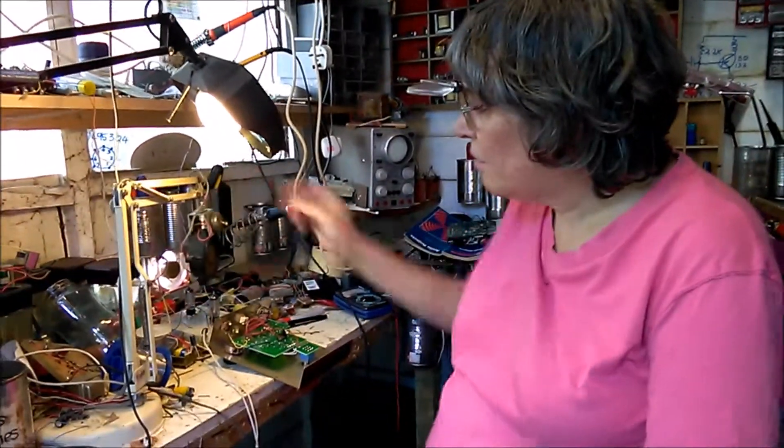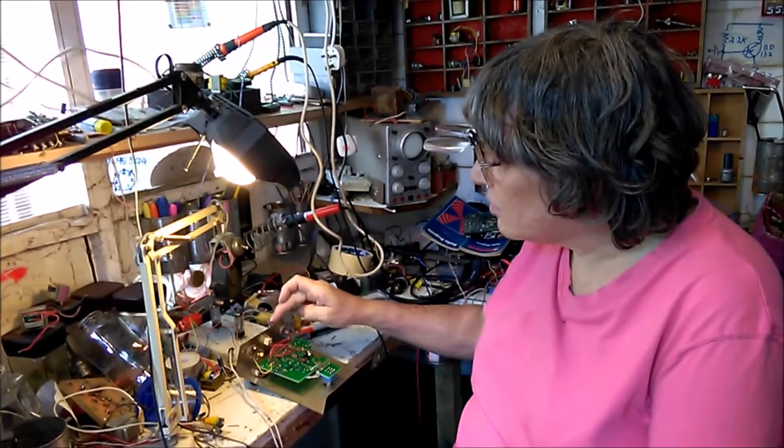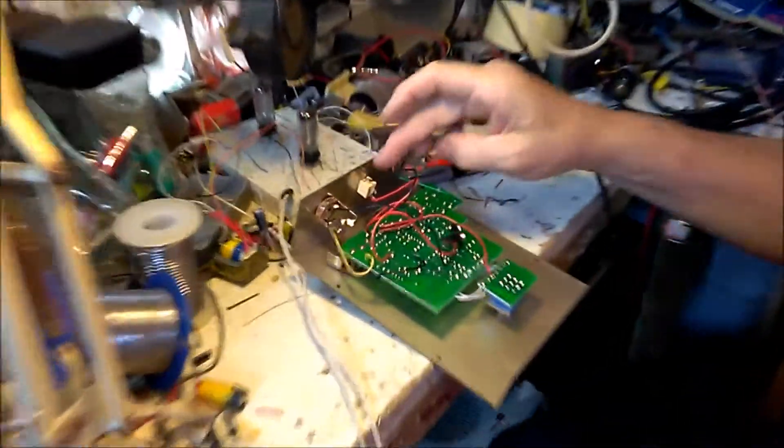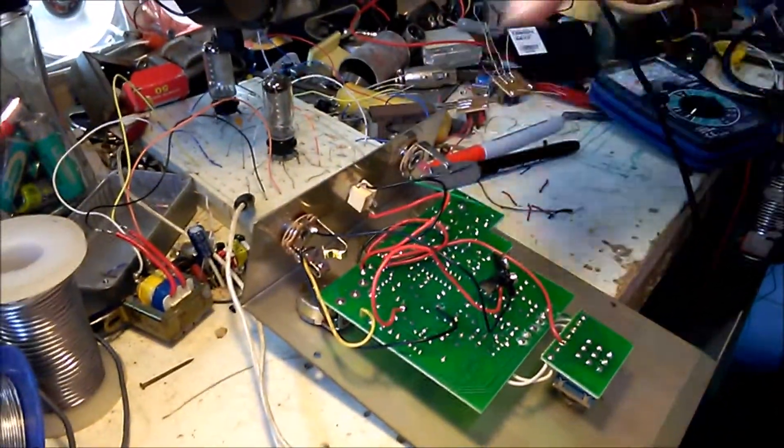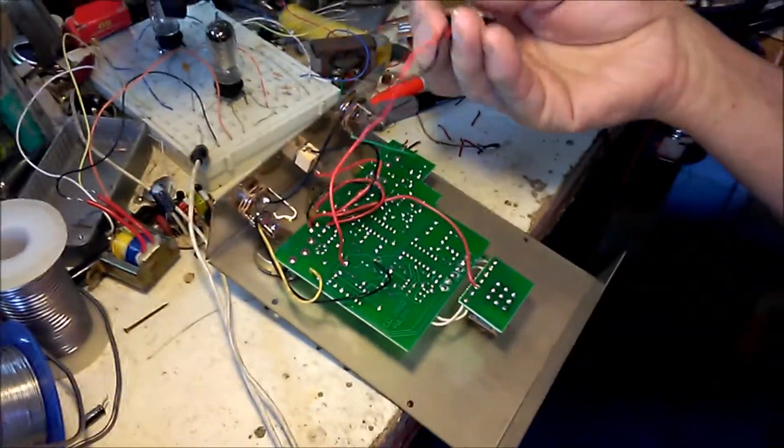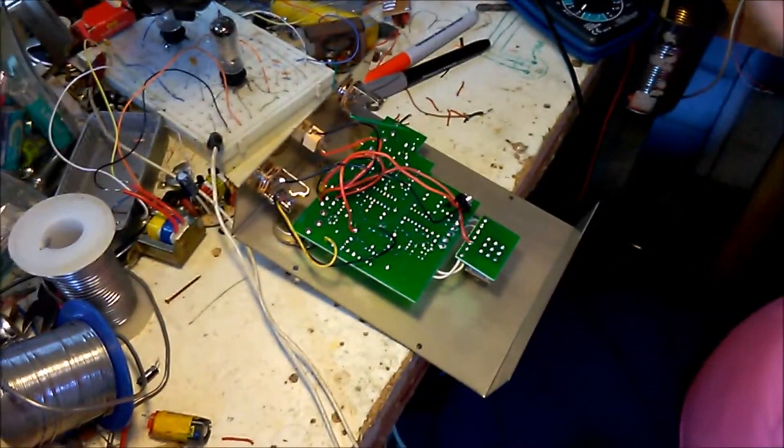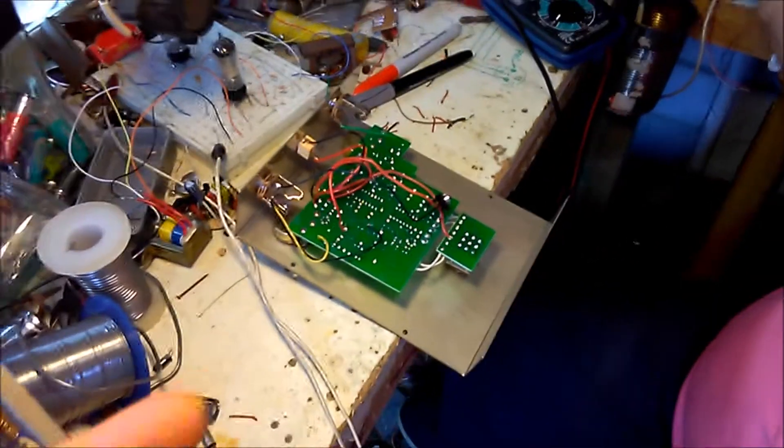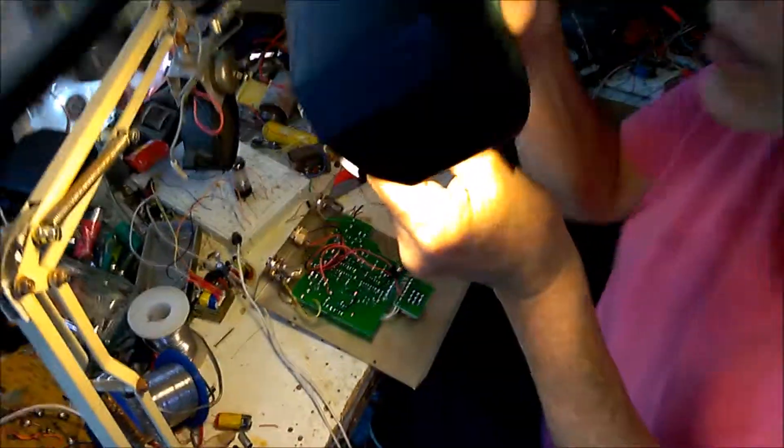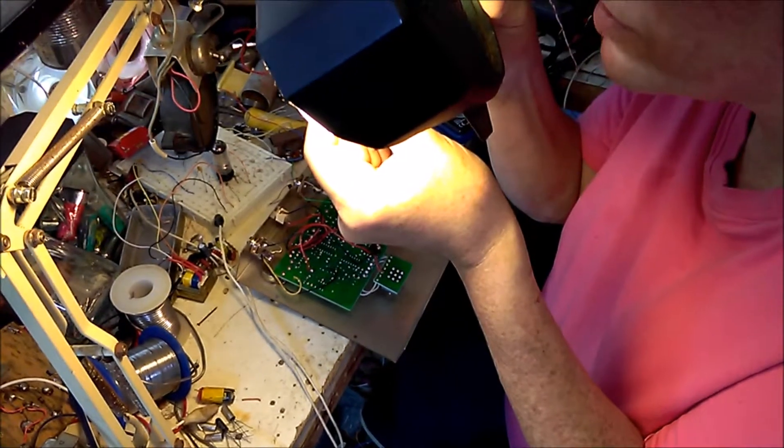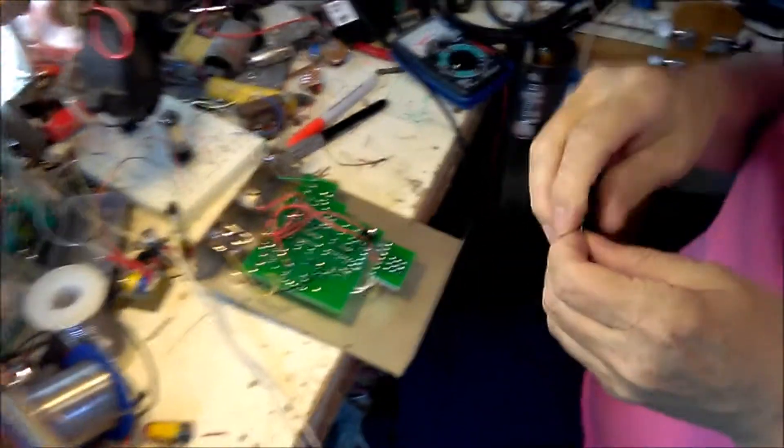So what we're going to do is make it so that the input supply from the power comes from the socket and into where the battery connection is. In order to do that we have to insert what's known as a voltage regulator, in this case a 7809. So that's what we're going to do.